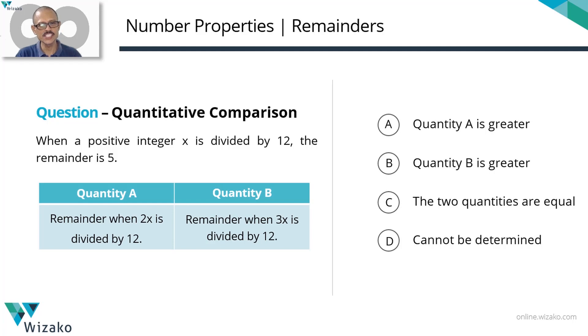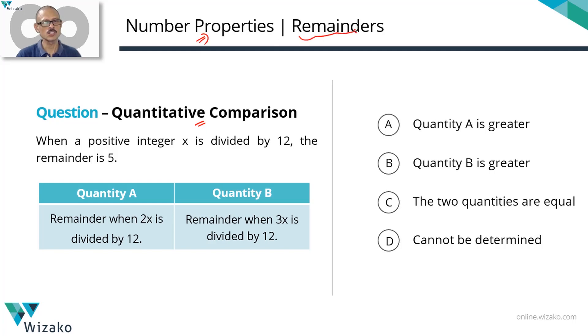This is a medium difficulty GRE quantitative reasoning practice question. It is a quantitative comparison question, coming from the topic of number properties, focusing on the concept of remainders.